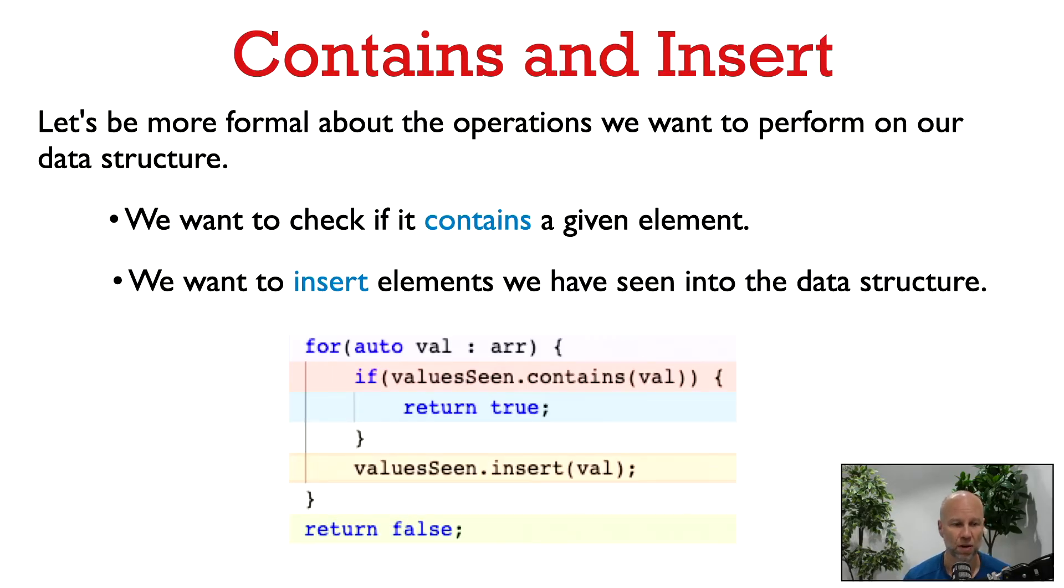Let's try to formalize what properties we are looking for in such a data structure. To solve the contains duplicate problem, we really just need two operations, which we might call contains and insert. Insert just means add an item to our data structure. Contains checks if a given item is already in the data structure.